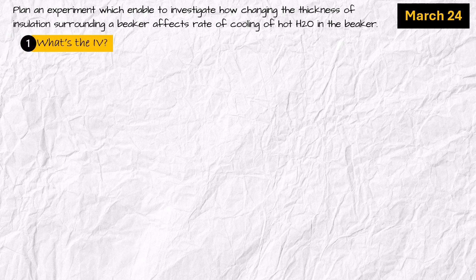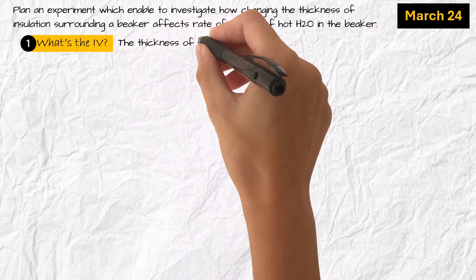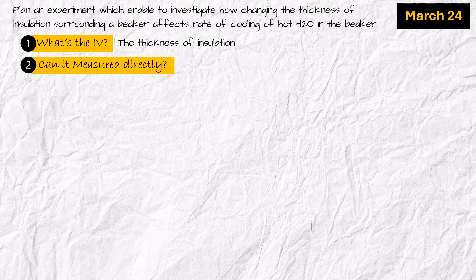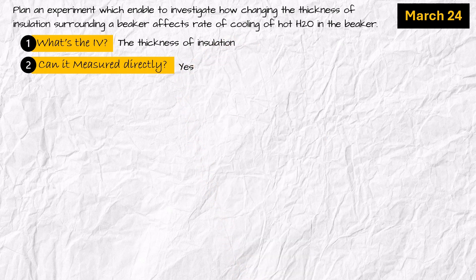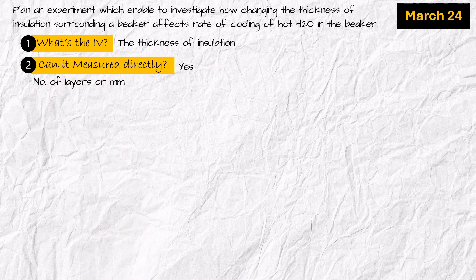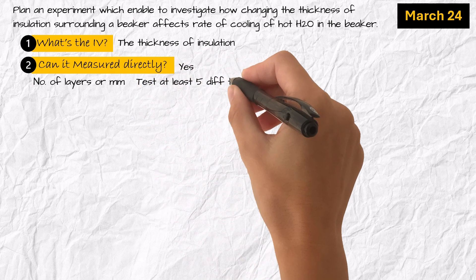For the March exam, they asked to plan an experiment to investigate how changing the thickness of insulation surrounding a beaker affects the rate of cooling of hot water in the beaker. Number one: what's the independent variable? The thickness of insulation. Number two: can it be measured directly? Yes — in terms of the number of layers or millimeters. We will test at least five different thicknesses.